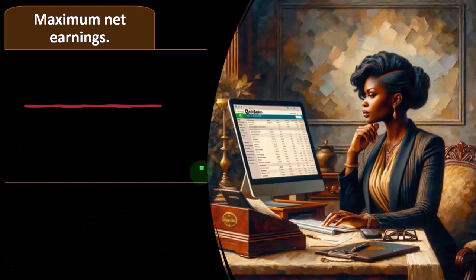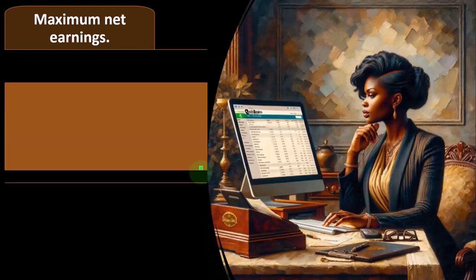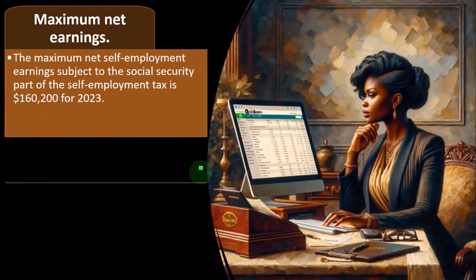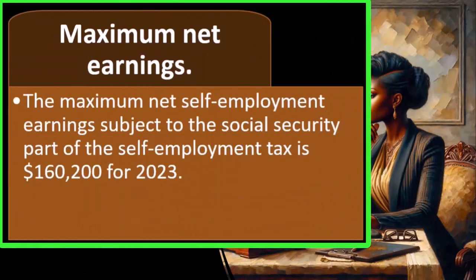Let's look at the maximum net earnings. The maximum net self-employment earnings subject to the Social Security part of self-employment tax is $160,200 for 2023.